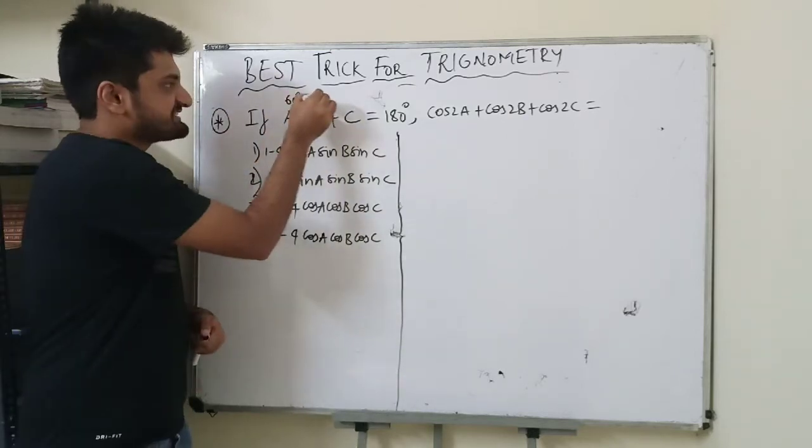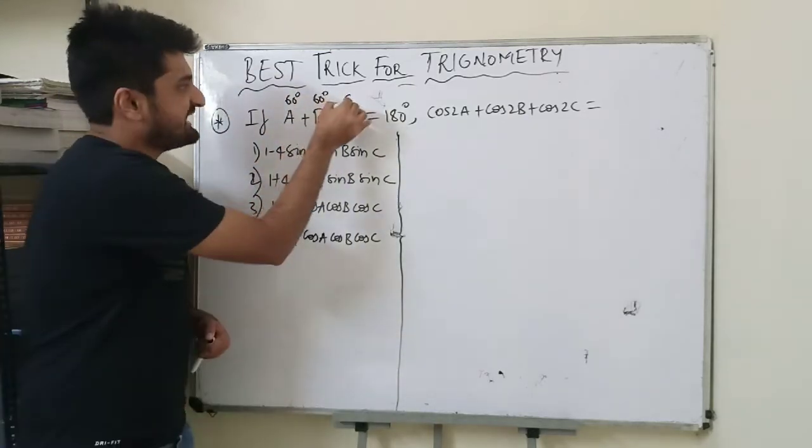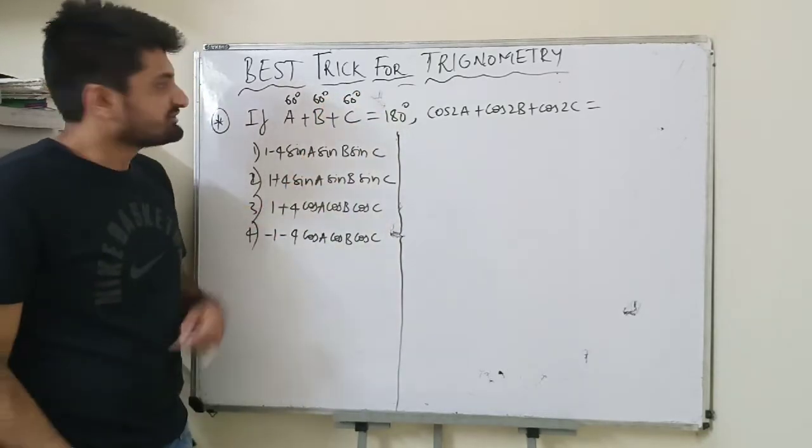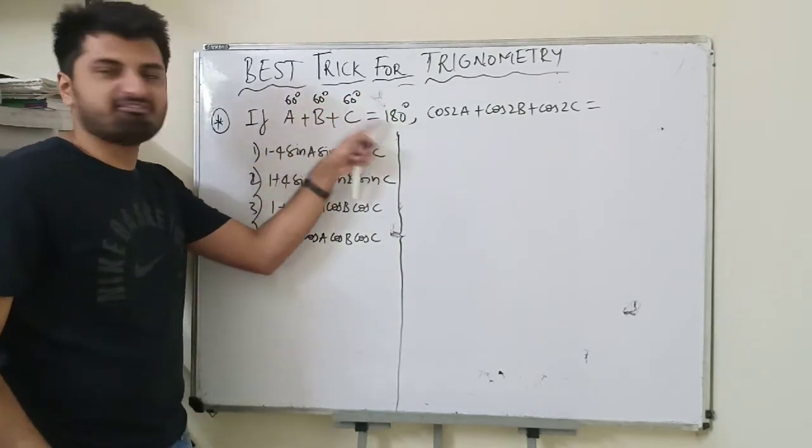So I can give a as 60 degrees, b as 60 degrees, c as 60 degrees. So 60 plus 60 plus 60 will be 180 degrees, which satisfies the condition.